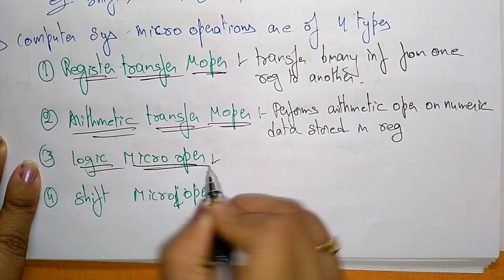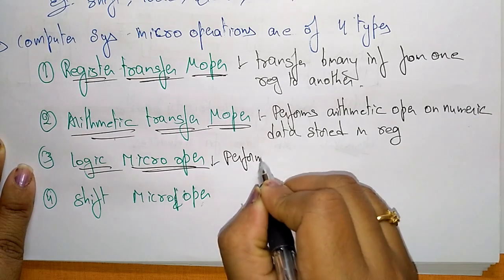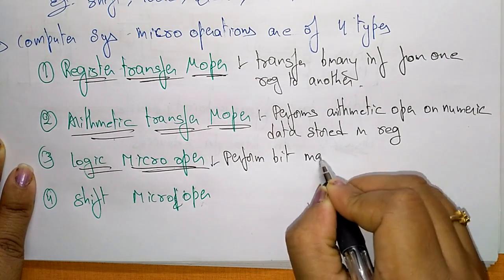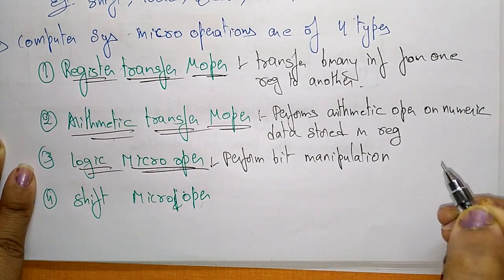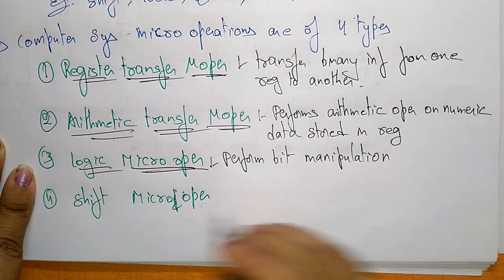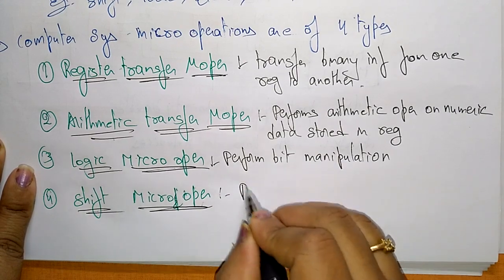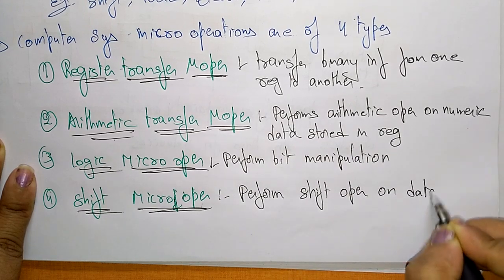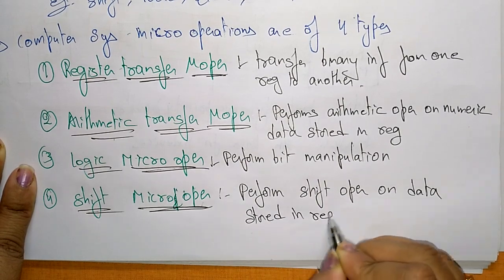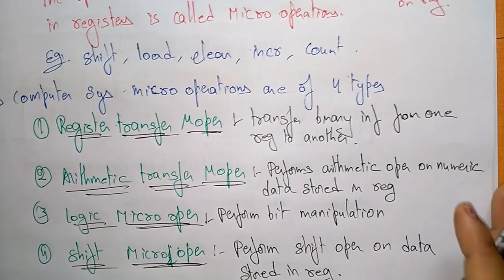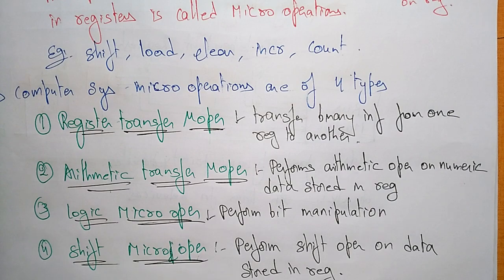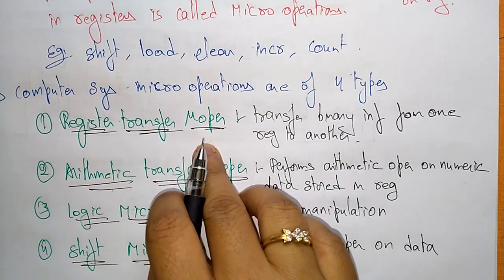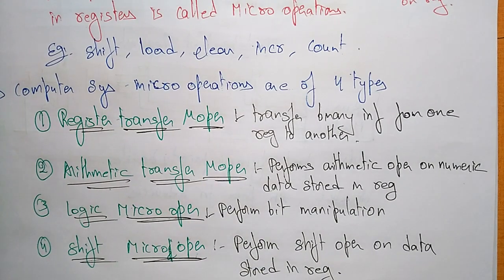Logic micro operations perform bit manipulation — they operate bit by bit on non-numeric data stored in registers. Shift micro operations perform shift operations on data stored in registers. These are the different types of micro operations. Each computer system can perform four types: register transfer, arithmetic transfer, logic, and shift micro operations.